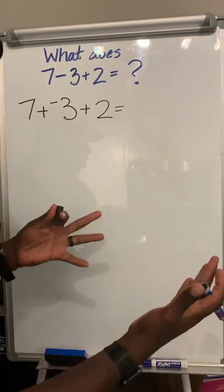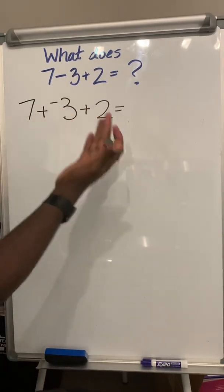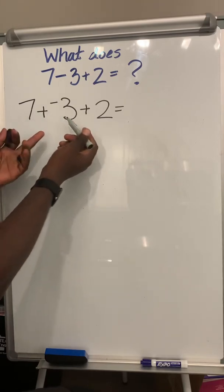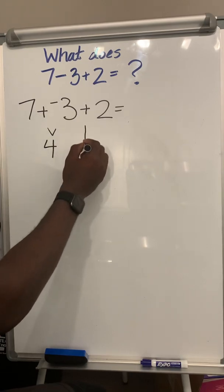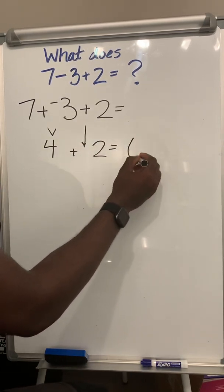We take this and we turn it into this, so everything is addition, so we make it very simple. When everything is addition, what do you do? You just add it up. Seven plus negative three is four, bring this down, four plus two equals six.